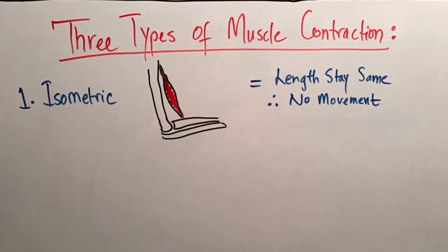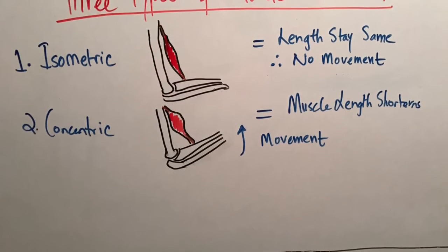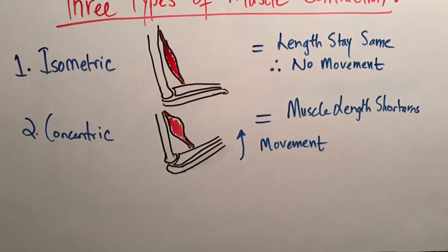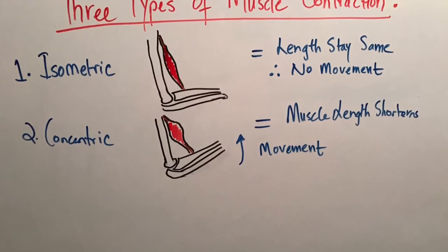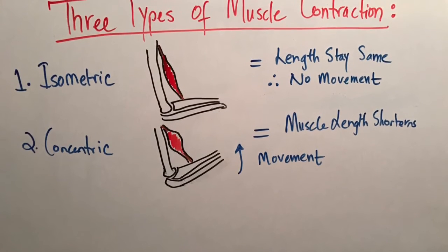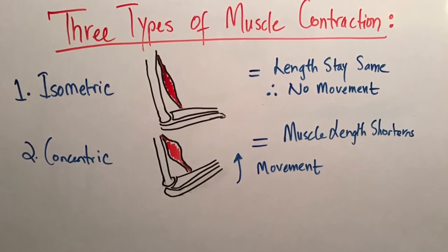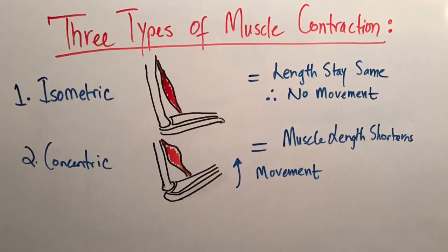During concentric contractions, on the other hand, the load is less than the contractile force and the muscle shortens. Furthermore, cross bridges will overlap less efficiently at faster rates of shortening velocity, generating a lower force output.